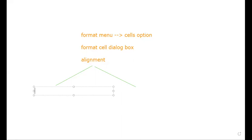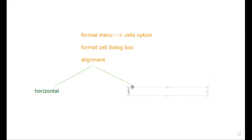The two types of alignments are horizontal alignment and vertical alignment.